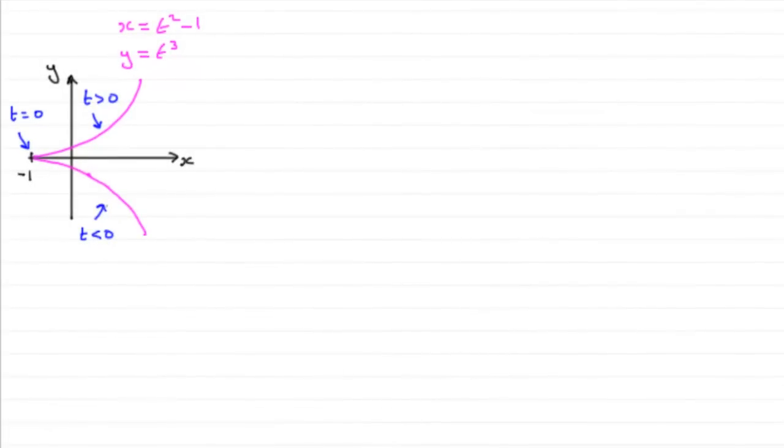Hi. In this tutorial, I'll show you how to find the volume of revolution about the x-axis when you have the equation of a curve in parametric form. The example I've taken here has x = t² - 1 and y = t³.